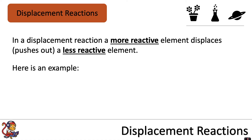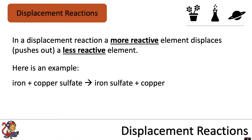Here is an example. Iron, when reacted with copper sulphate, will push out the copper, and you will end up with iron sulphate plus copper.